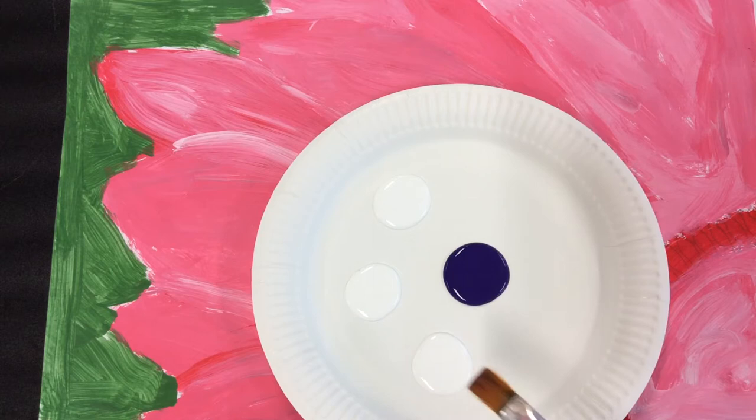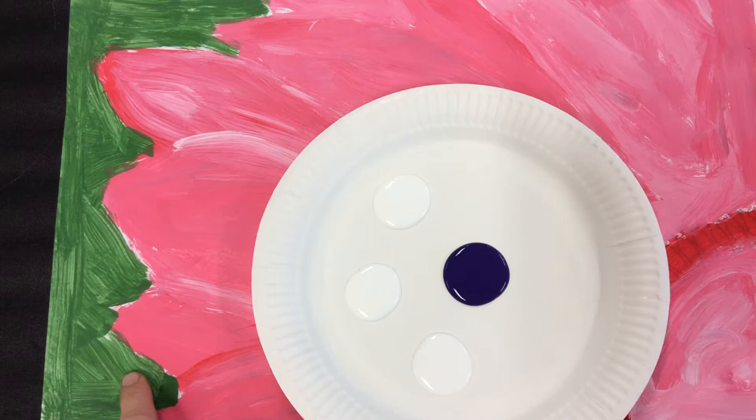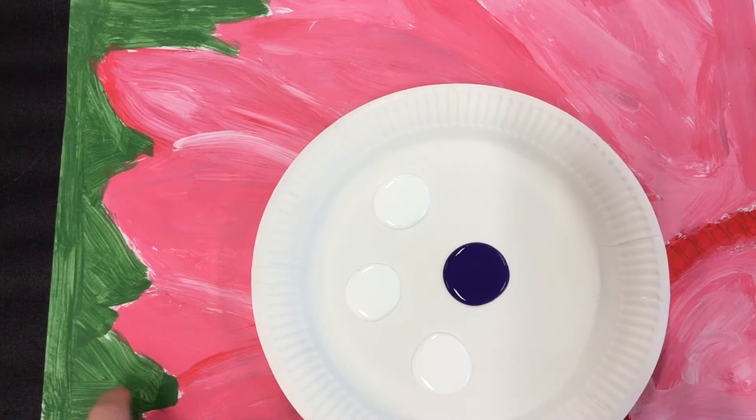Our students are going to learn to tint today, and they're going to create three tints of one color, so it's still monochromatic. The final painting does have another color, and we're going to add the word complementary color to our vocabulary today in class. We're going to do monochromatic flowers, but we're going to add a complementary color for the background.